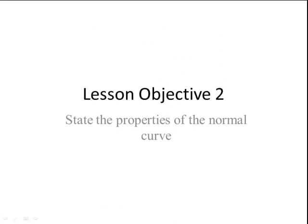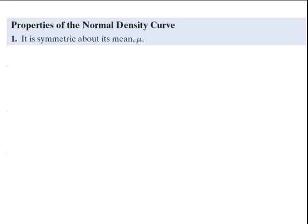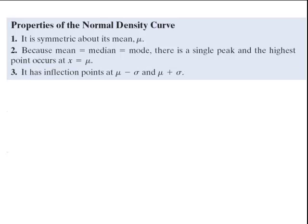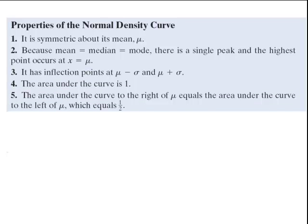Lesson objective number 2. These are properties for all normal distributions. It is symmetric about its mean, mu. Because the mean, the median, and the mode are all equal, there is a single peak and the highest point occurs at x equals mu. It has inflection points at mu minus sigma and mu plus sigma. The area under the curve is one. The area under the curve to the right of mu equals the area under the curve to the left of mu, which is one-half, because it is symmetric about mu and the total area is one.